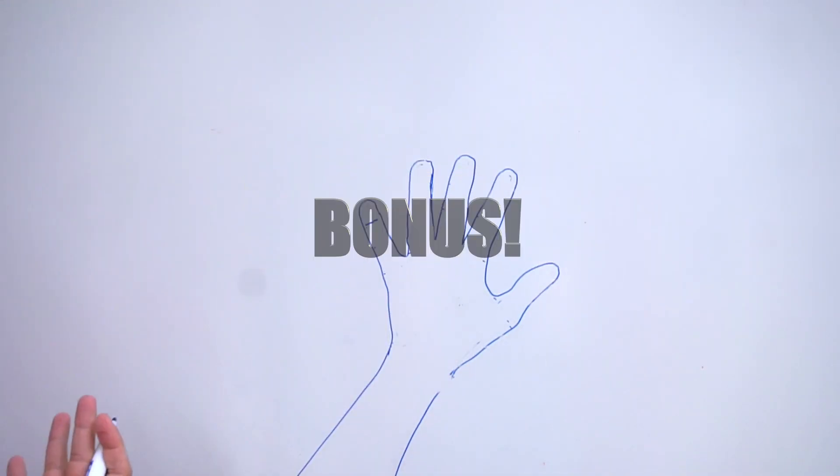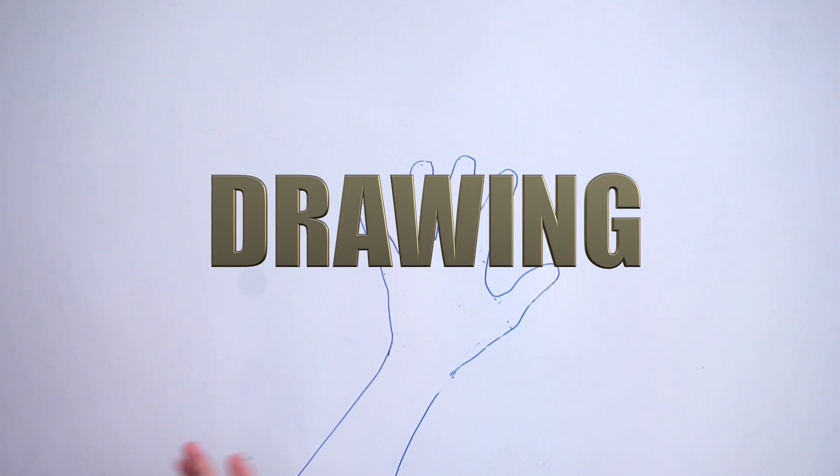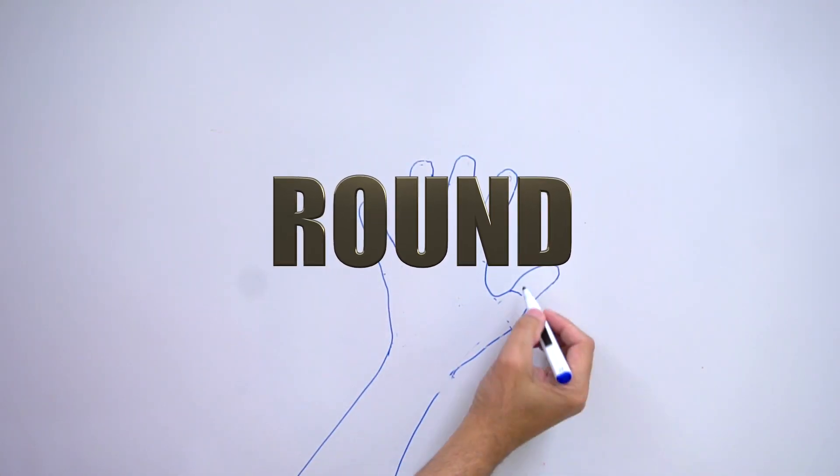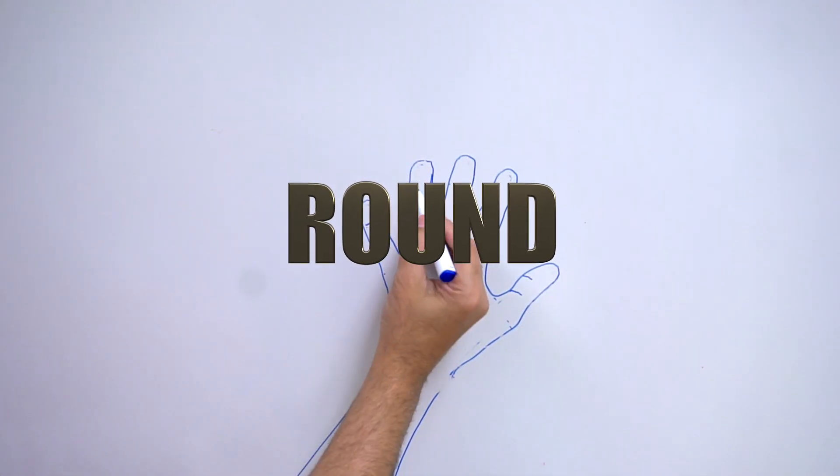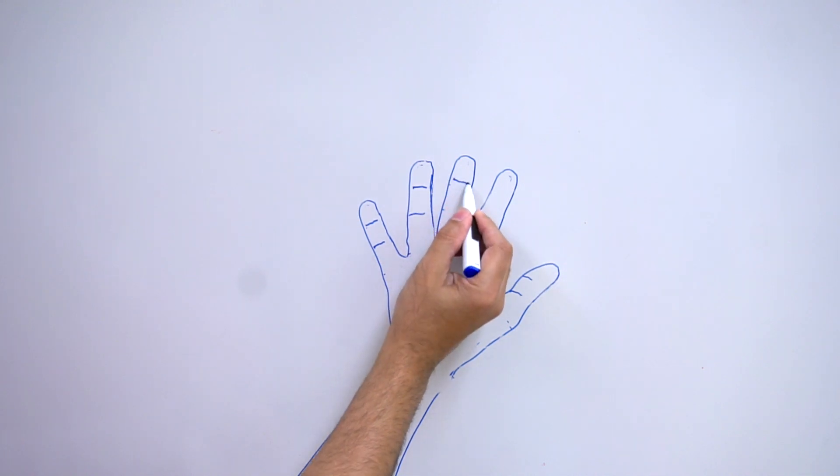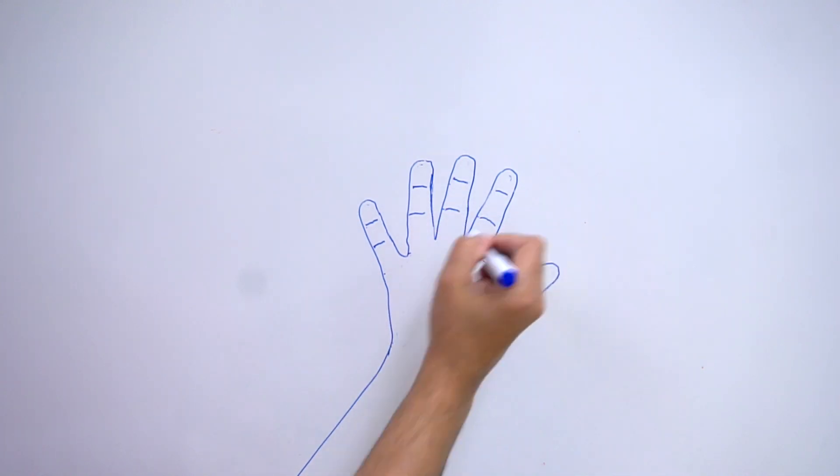Now for the bonus round. Let's draw just a hand. Kind of the same thing we did before. We're going to divide it, but more wrinkly, progressively getting bigger and bigger.